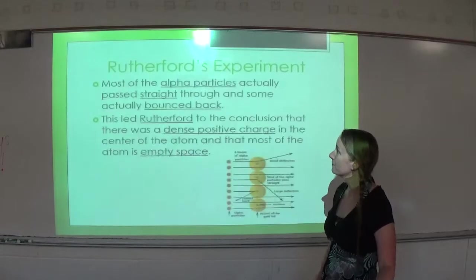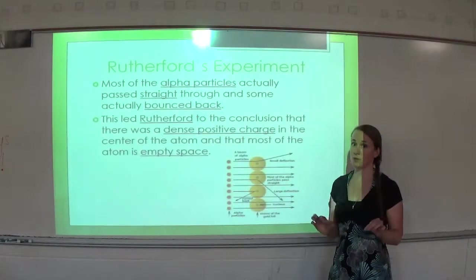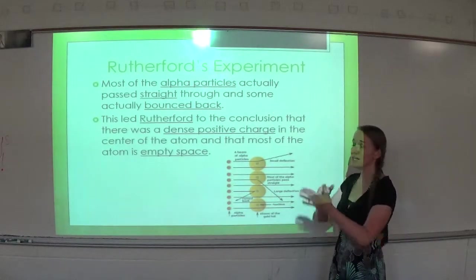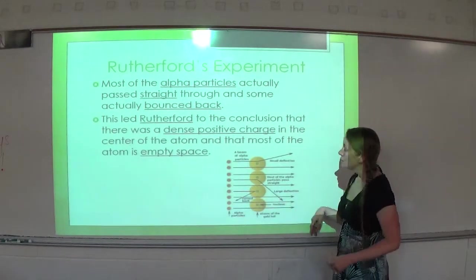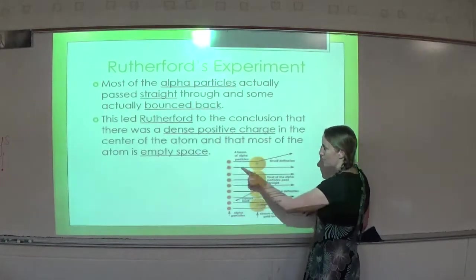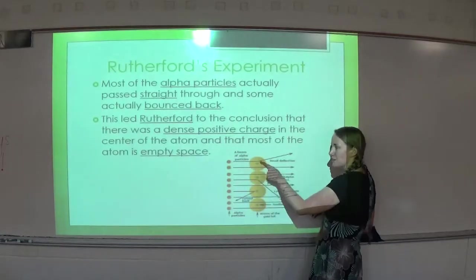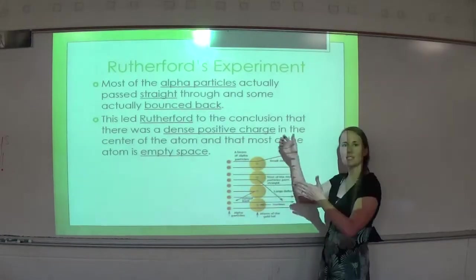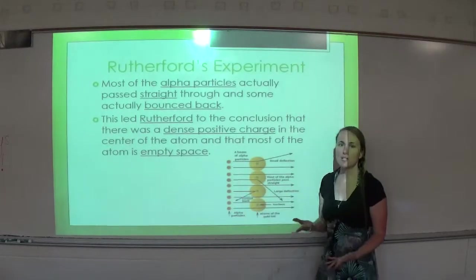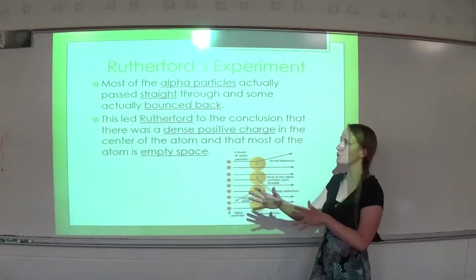However, that's not what actually happened. Most of the alpha particles actually passed straight through with no deflection. Some did deflect, but some actually hit and bounced back. So some particles passed straight through with no deflection, some deflected — meaning they skimmed the side of something — and some hit and actually bounced back.